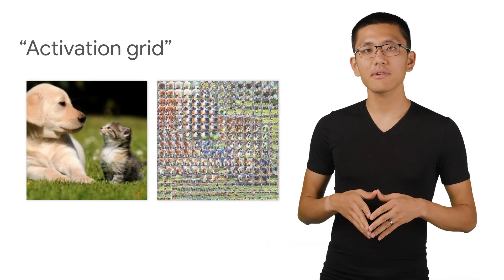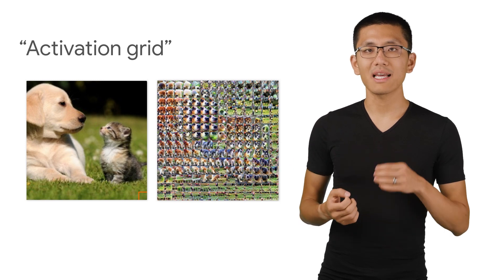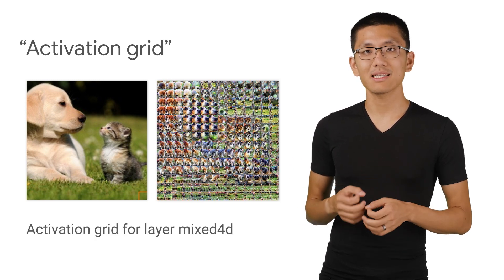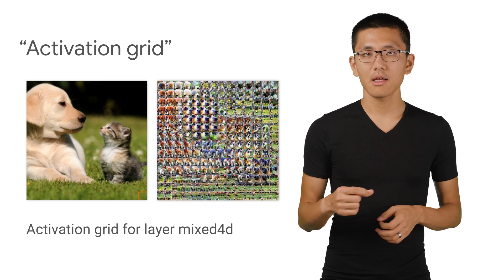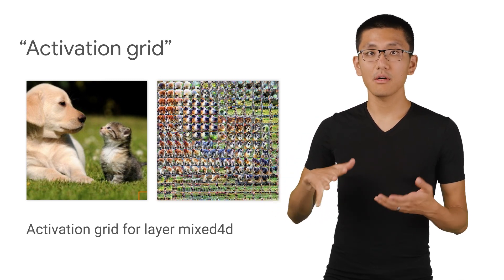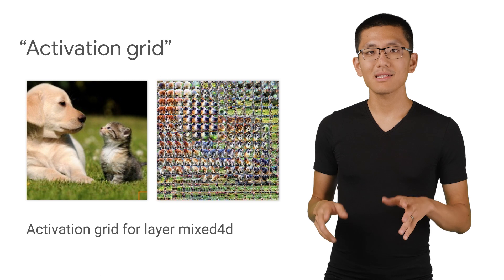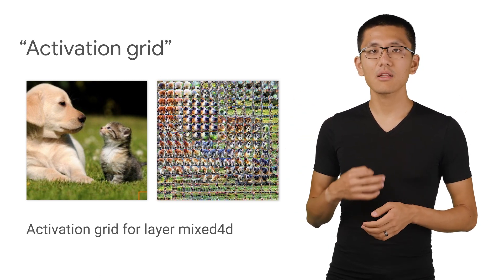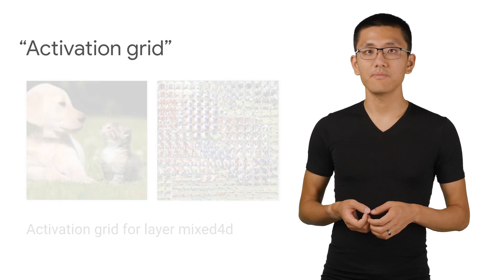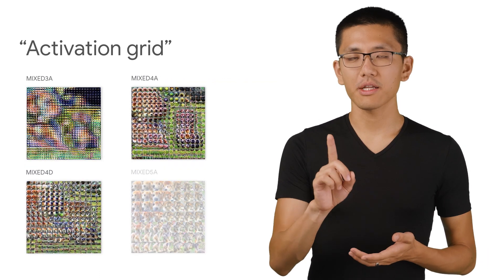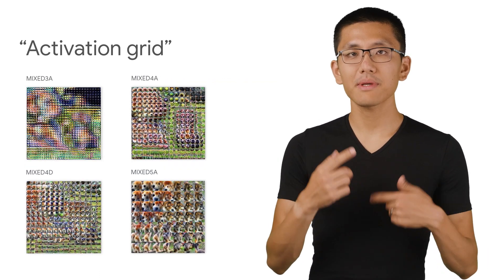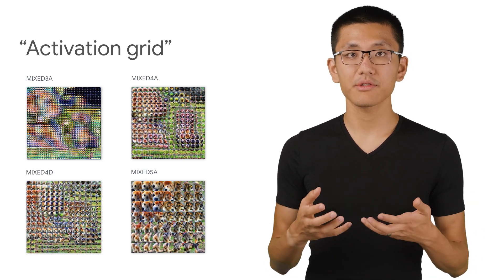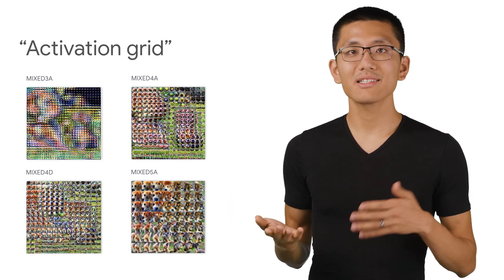Spatial activations give us a sense of what features a specific region of an image is activating most strongly. By doing this across all the different patches of an image, we can build an activation grid, showing us the features that are activating the strongest for each region. This is for only one particular layer, so now we want to repeat this process for the other layers, some earlier in the network and some later.